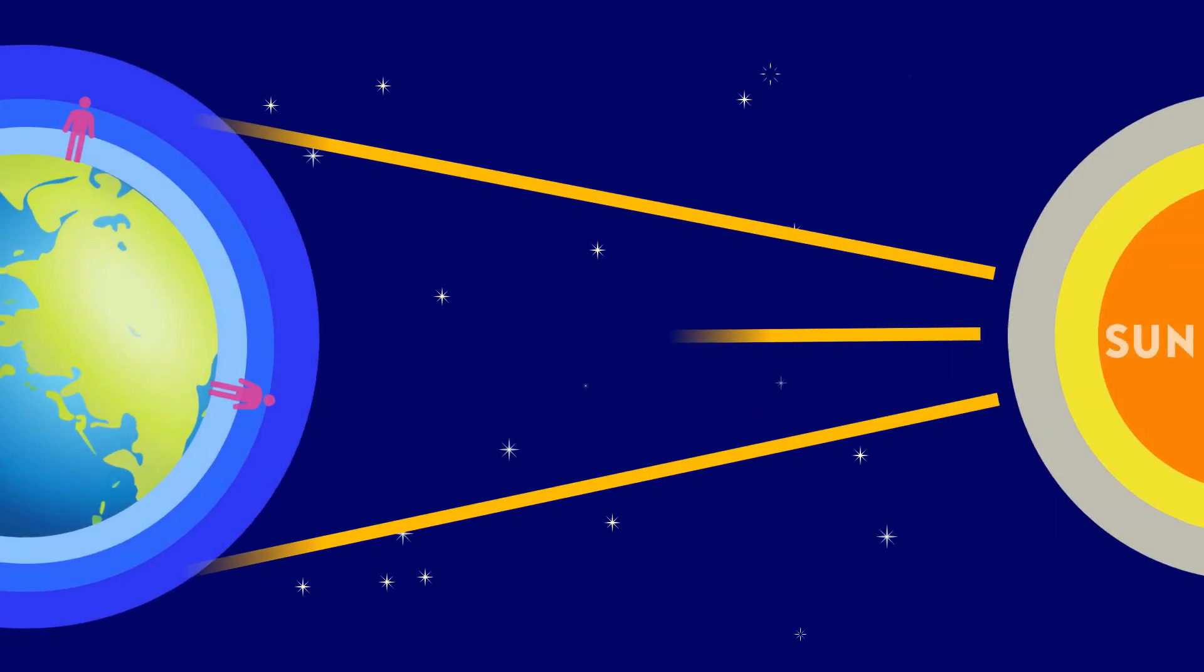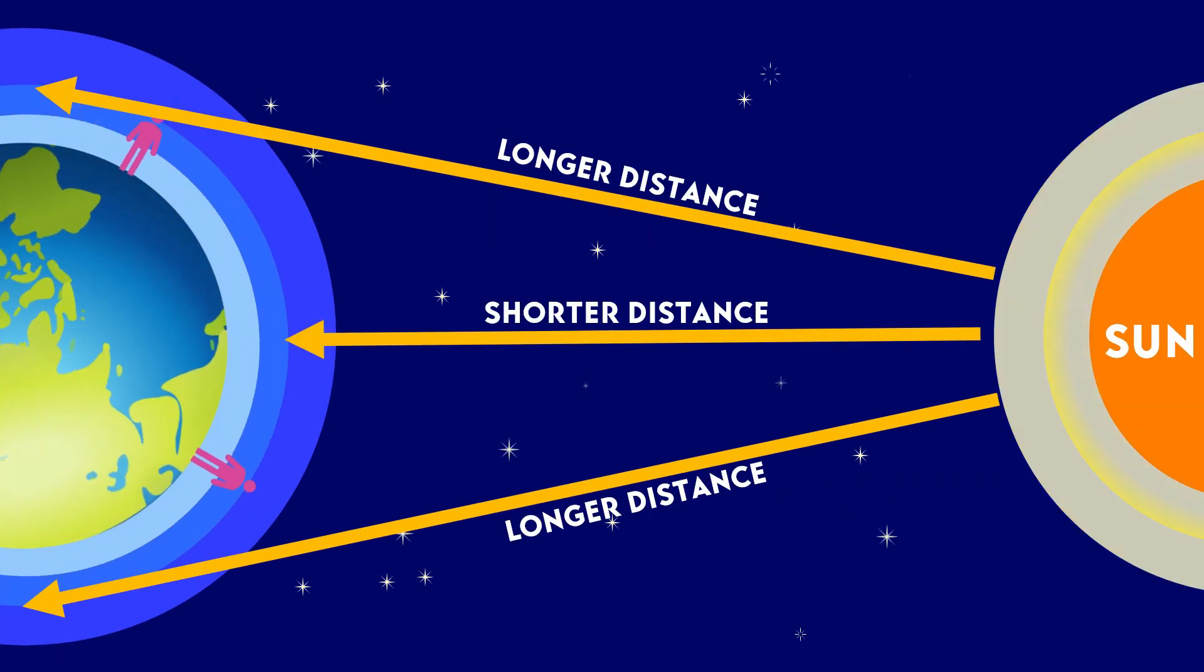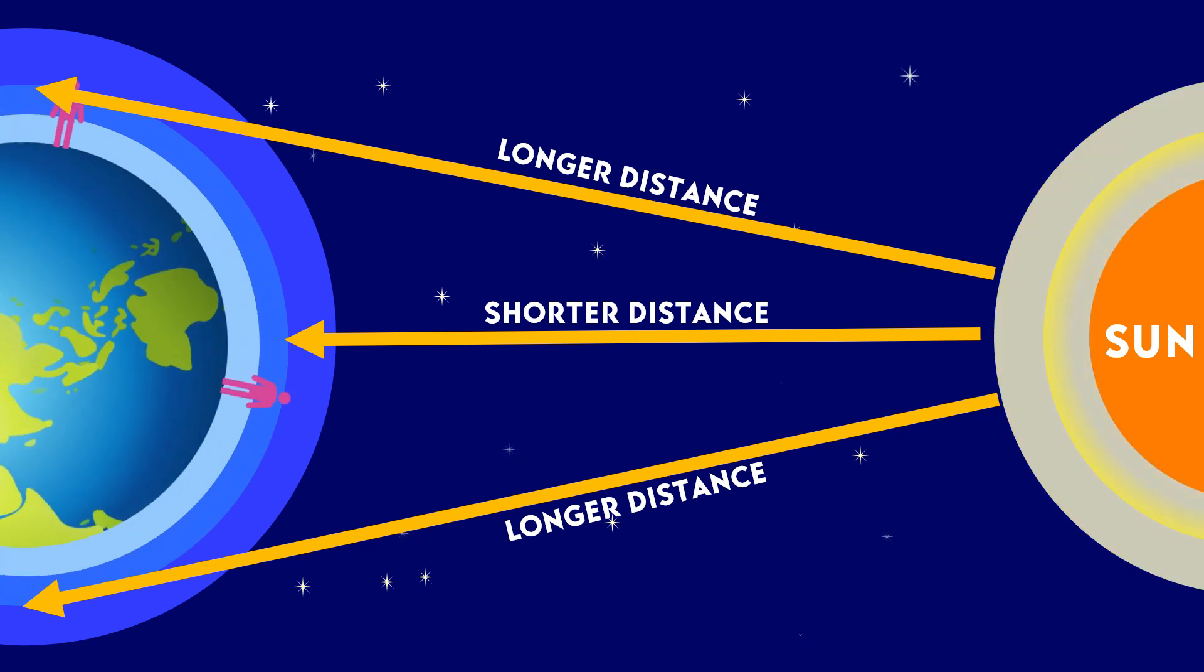The distance that sunlight must travel through the atmosphere before reaching our eyes also affects the amount of light that is scattered.